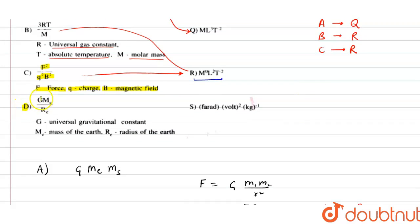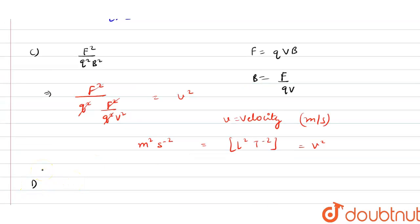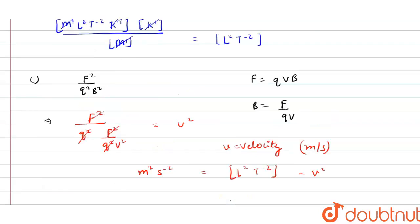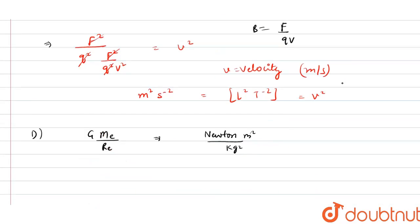Option D is GMe/Re, where G is the universal gravitational constant, Me is the mass of the Earth, and Re is the radius of the Earth. Substituting the unit of G: Newton·m²/kg² × kg / m.